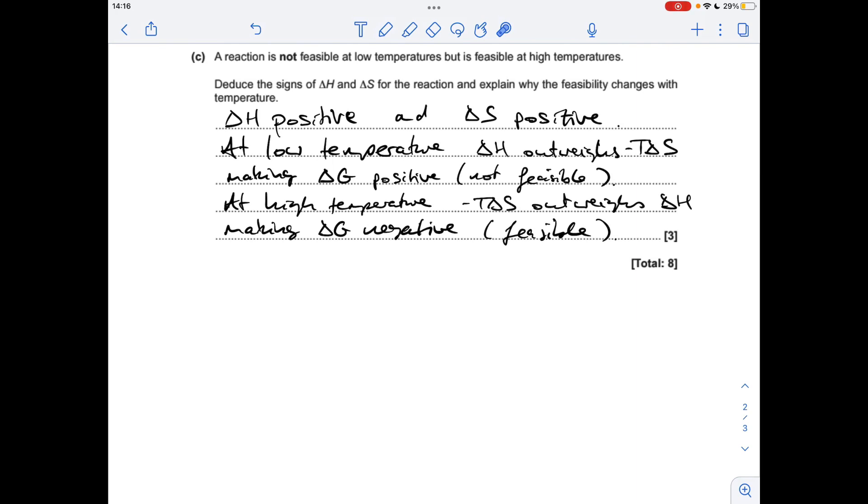So in terms of an answer, I would write something like this. So obviously, delta H and delta S both need to be positive. So I'm saying at low temperature, the delta H would outweigh the minus T delta S term. That would make delta G positive, and obviously the reaction's not feasible then. But at high temperatures, the minus T delta S term outweighs the delta H. That's obviously going to make delta G negative, and that would make the reaction feasible.